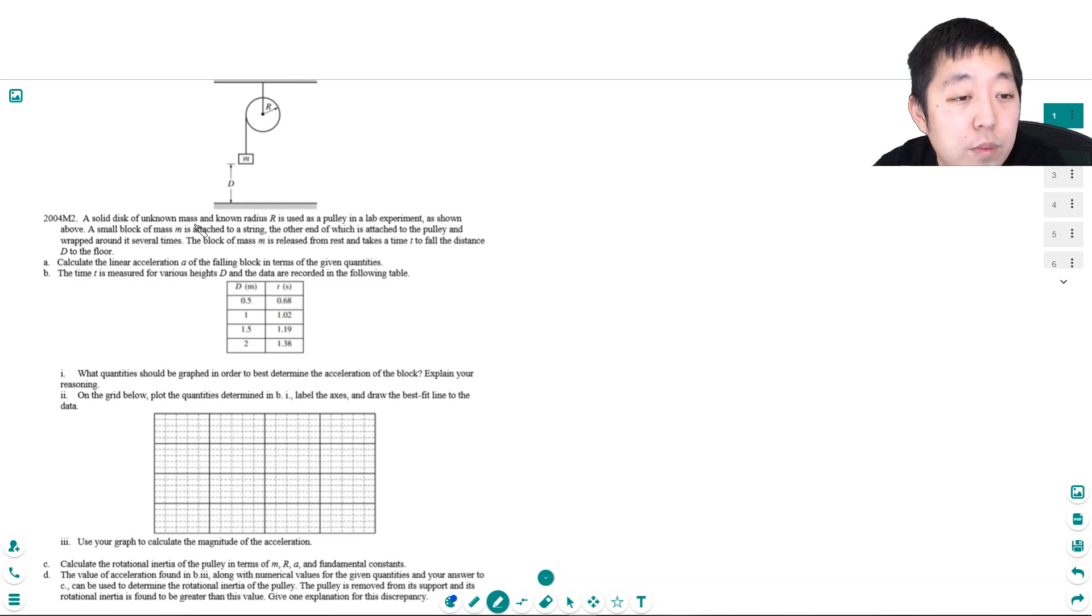A solid disk of unknown mass and known radius is used as a pulley in a lab experiment. A small block of mass m is attached to a string, the other end of which is attached to the pulley and wrapped around it several times. The block of mass m is released from rest and it takes time t to fall the distance d to the floor. Calculate the linear acceleration a of the falling block in terms of the given quantities. So what are the given quantities? They're giving me this block mass m, they're giving me the time it takes to fall, and they're giving me a distance d. I want to find the acceleration.